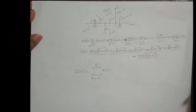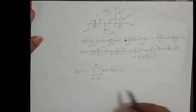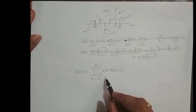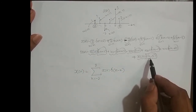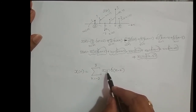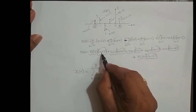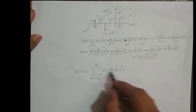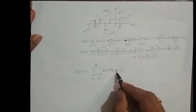The delta function term is written as delta of n minus k. If I expand this summation, I should get back the original expression. When k equals minus 2, I get X of minus 2 times delta of n minus (minus 2), which is delta of n plus 2. When k equals minus 1, I get X of minus 1 times delta of n plus 1. When k equals 0, I get X of 0 times delta of n.